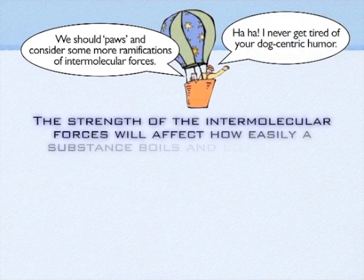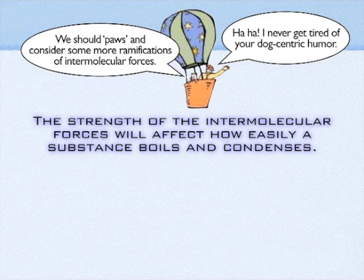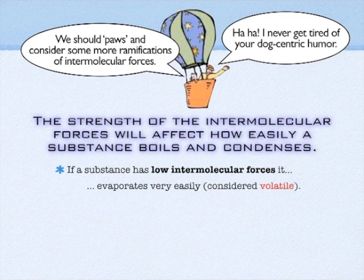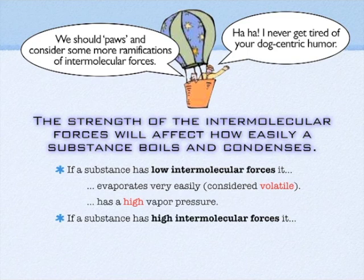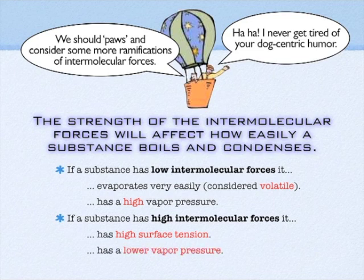This ties back to the idea of intermolecular forces and how easy it is to boil or condense. If you have low intermolecular forces, that means you're volatile — you vaporize easily. We typically think of things like gasoline and perfume as being very volatile, which means they have a very high vapor pressure and easily evaporate. The opposite would be things with high intermolecular forces. Water actually has a relatively low vapor pressure, which is why it takes a very high temperature to get water to boil — water has a lot of intrinsic surface tension and doesn't want to form a vapor. Those intermolecular forces are also one of the reasons why water has such a high specific heat, because it's hard to get those molecules moving around.